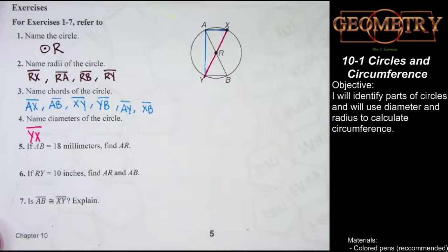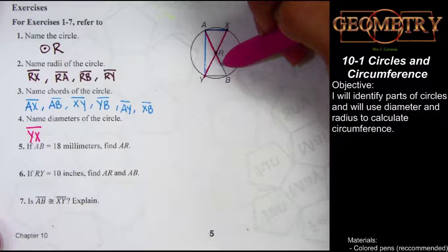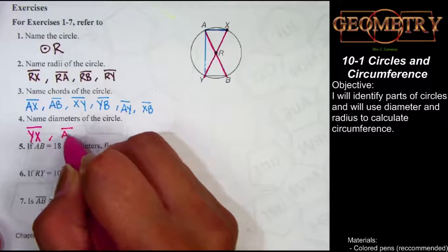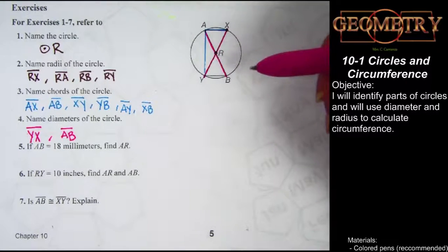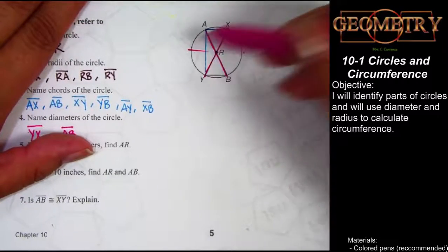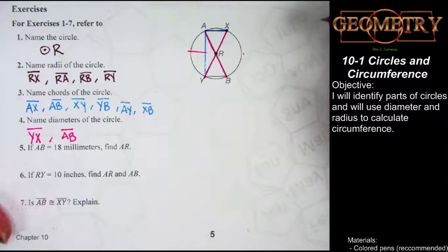Pause the video now to locate the other diameters in the circle. Welcome back. Here is the other diameter in the circle — in order to go from A to B, you have to pass through point R, which is the center of our circle. So line segment AB is the other diameter in the circle. There do not appear to be any other diameters labeled here, since we're not going to make points up and add more.